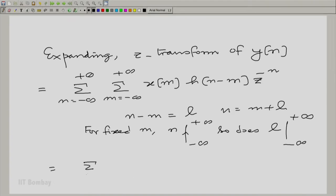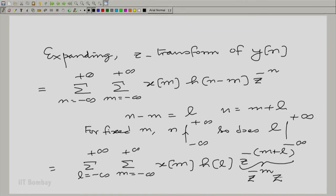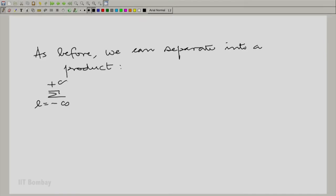So, this breaks down into summation m going from minus to plus infinity, summation L going from minus to plus infinity, X(m), H(L), Z to the power minus (m + L). And we can break this down into Z to the power minus m times Z to the power minus L.